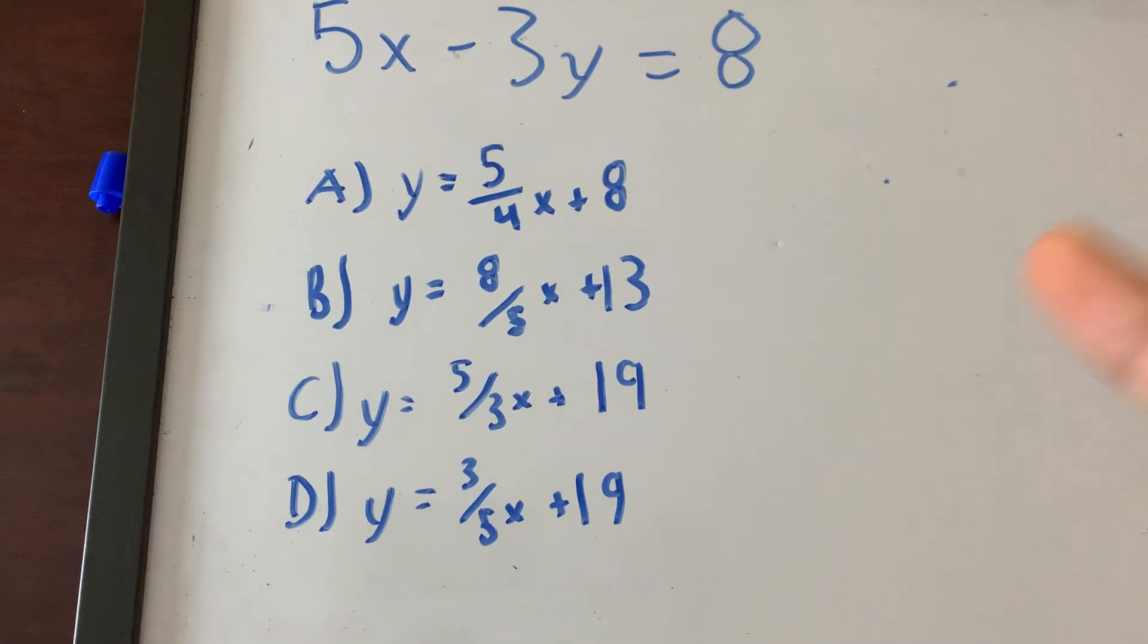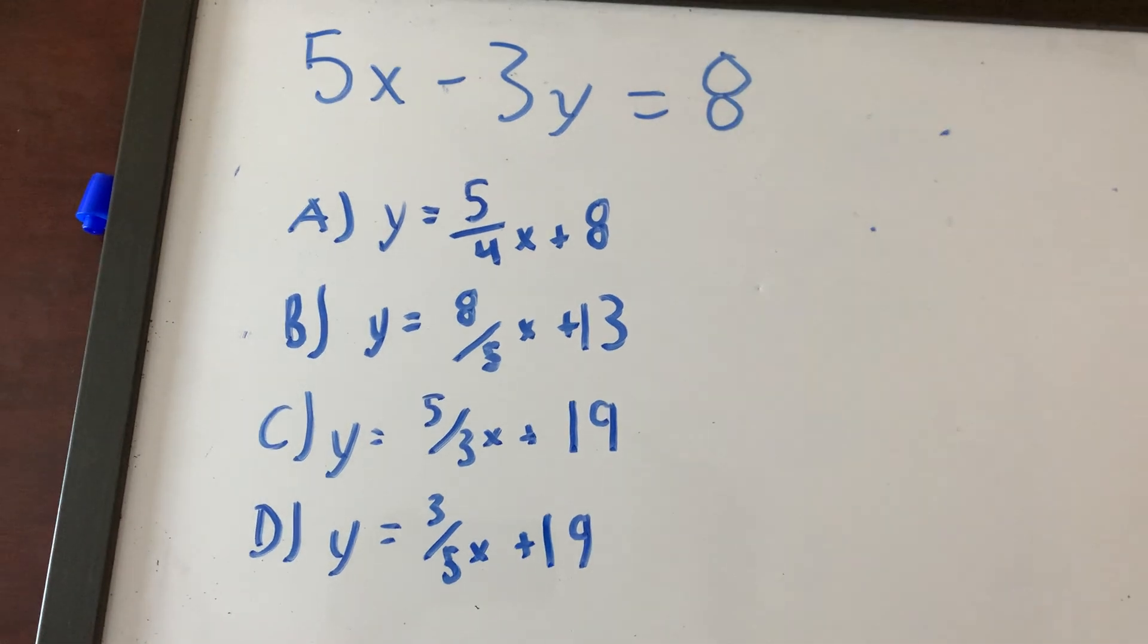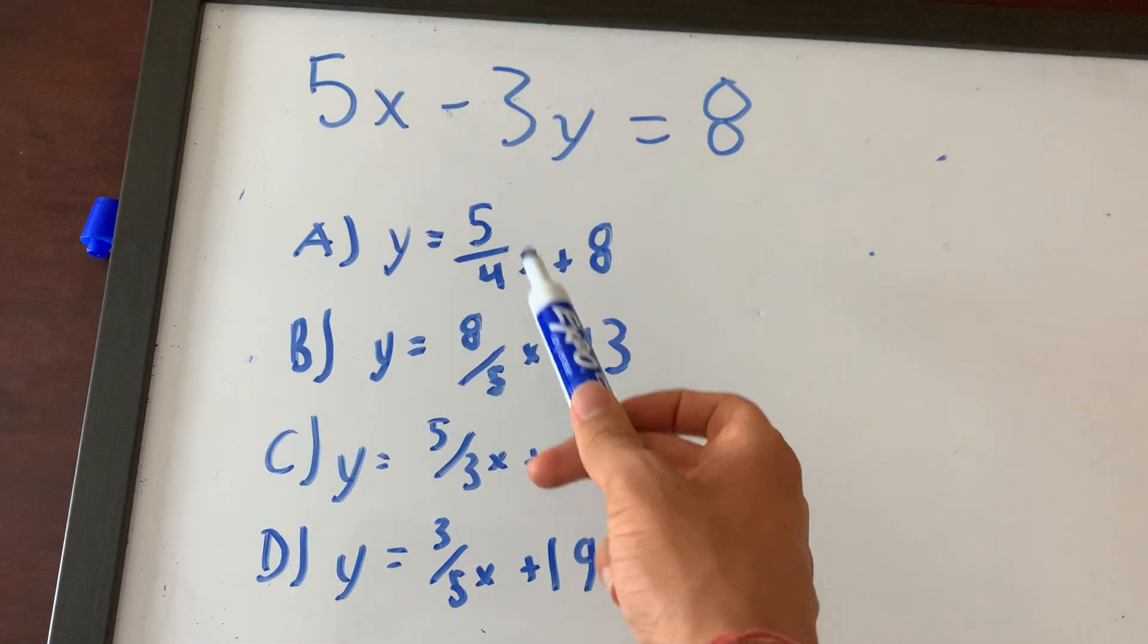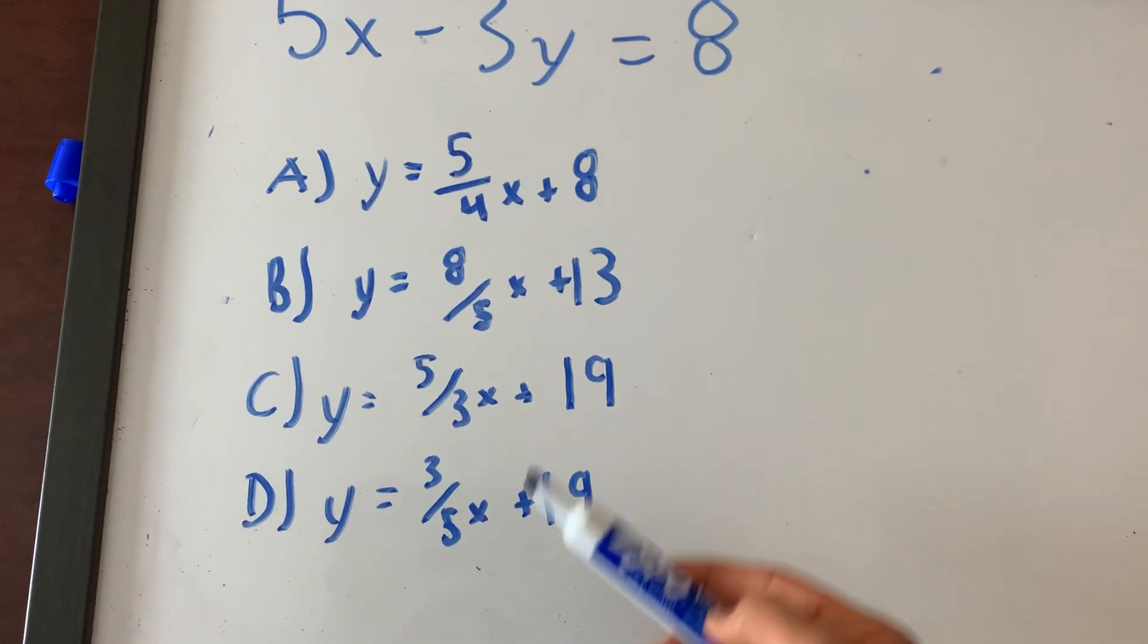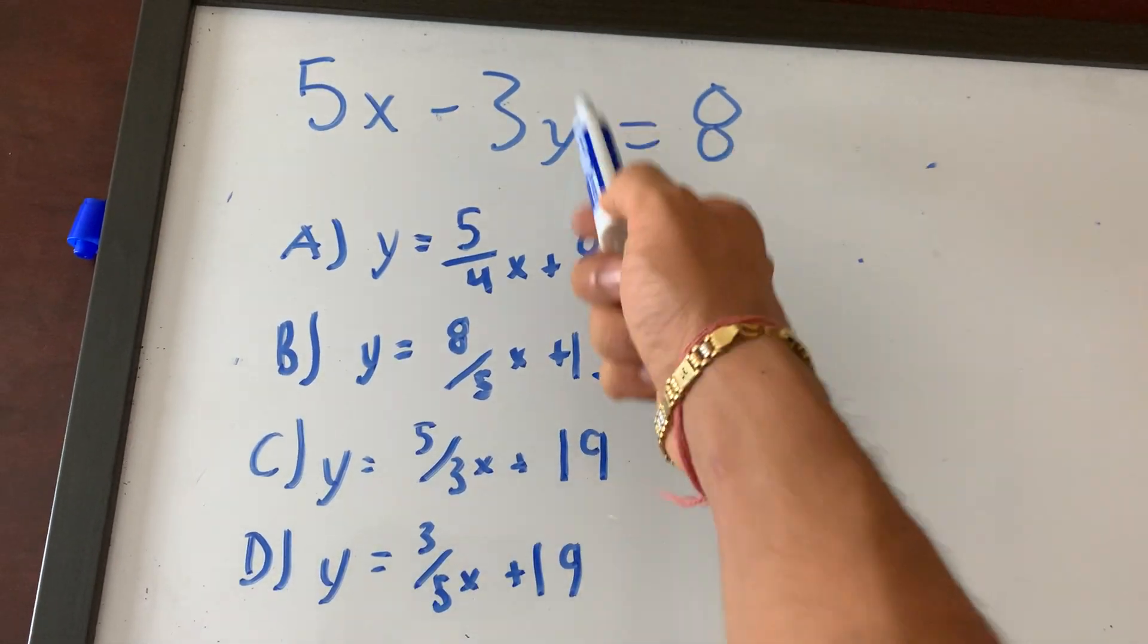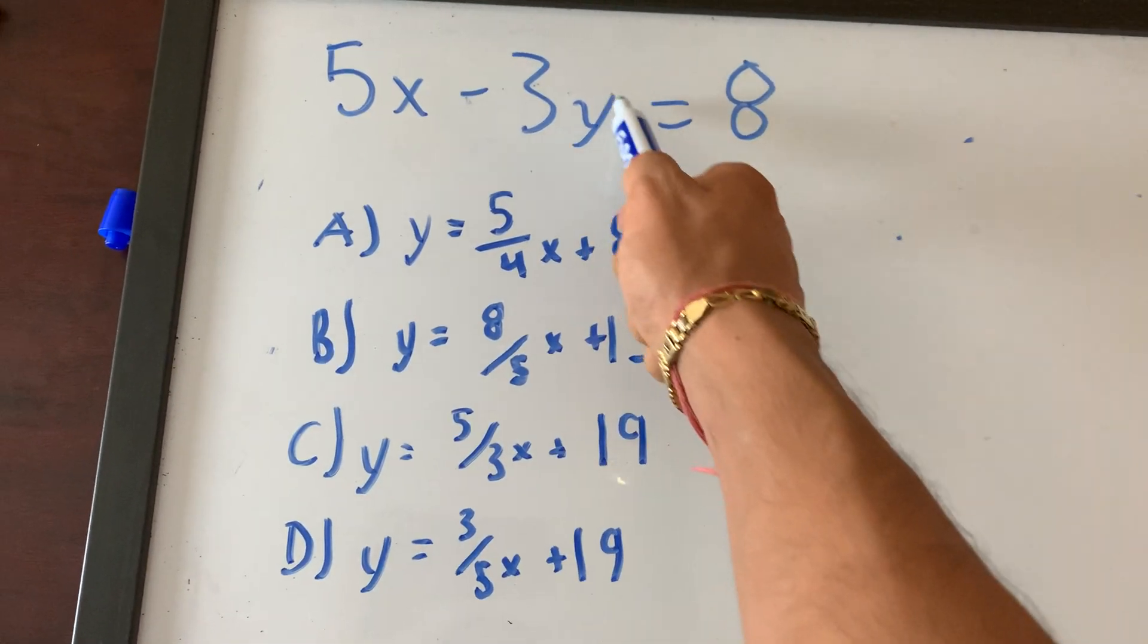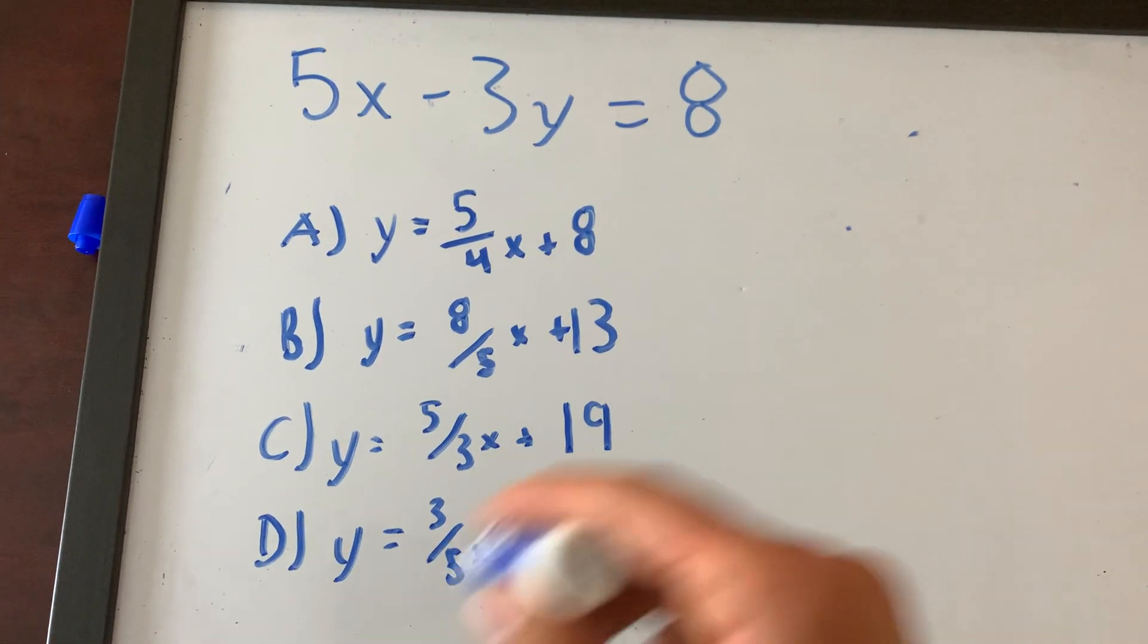Now this problem right here, guys, you guys see ABCD. If I asked you right now, I want you guys to find which of these lines, out of ABCD, is parallel to this line. So which line formed by these equations is parallel to this line? I want you guys to pause the video and try to find out right now.